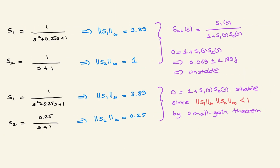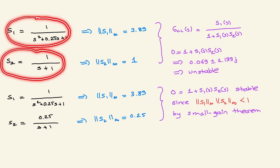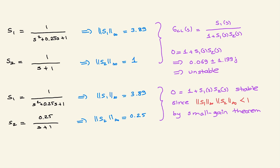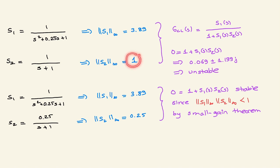Let's look at two transfer functions. In the first example, I consider transfer functions S1 and S2. When I plot the Bode plot of S1, its H-infinity norm is 3.89. For S2, its H-infinity norm is 1. By the small gain theorem, this product is not less than one, so the closed-loop system can be unstable.